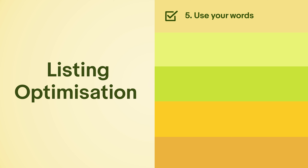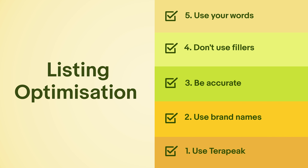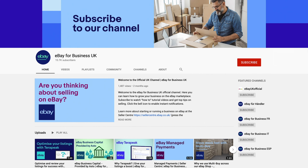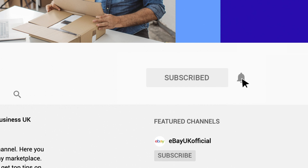To sum things up: number 5, max out your title space and word order; number 4, avoid fillers; number 3, accurate descriptions boost conversion; number 2, use brand names where appropriate; number 1, use Terapeak to see how similar products utilize keywords.